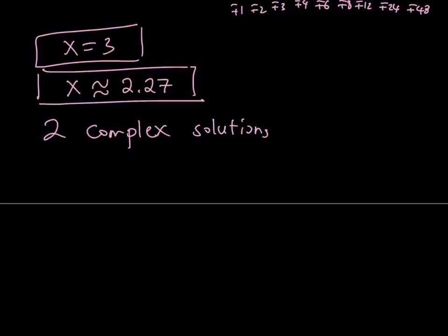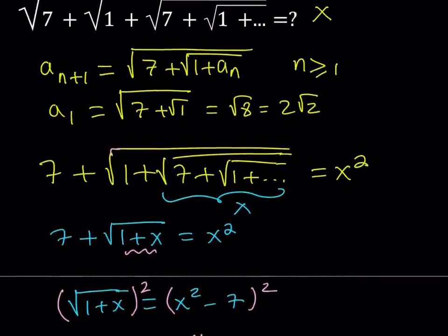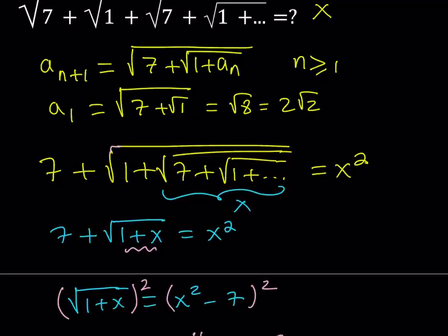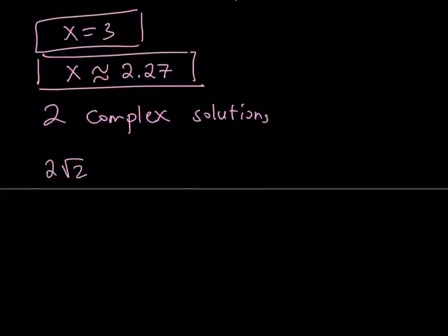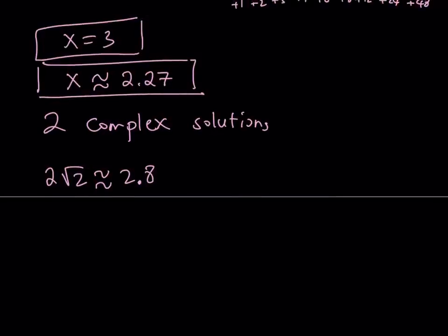We defined our sequence as follows: a sub n plus 1 is equal to that and a sub 1 is 2 root 2. So at least we know the first term and 2 root 2, by the way, is about 2.8. So this tells us that the first term is 2.8 and two of the values that I got for limits, one of them is a 3, one of them is 2.27. 2.27 is less than 2.8, so that's kind of suspicious.